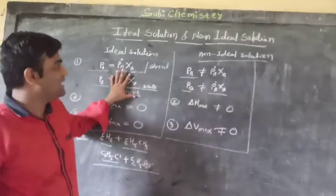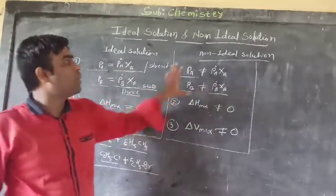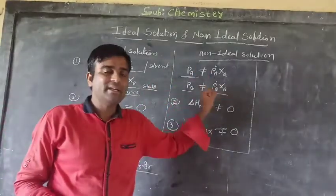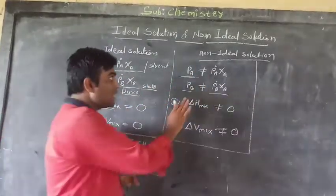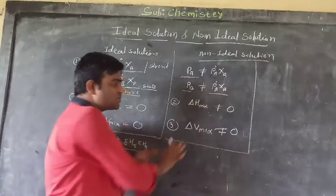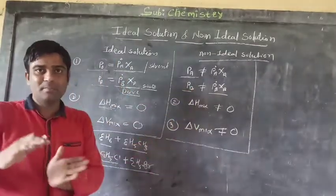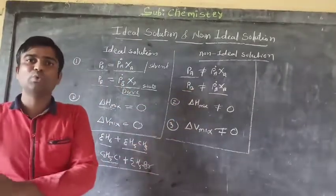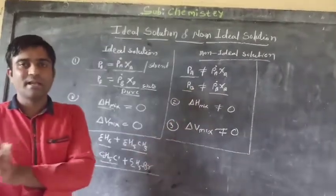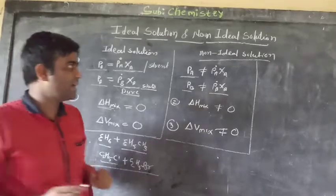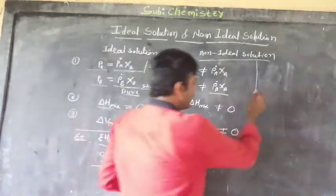So this is the ideal solution and this is the non-ideal solution. Now, non-ideal solutions are further divided into two types.